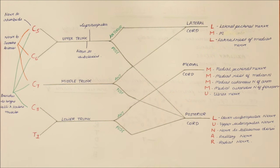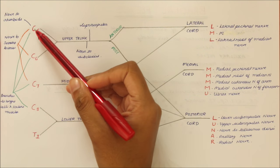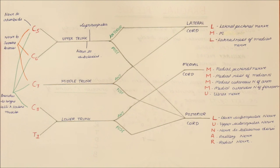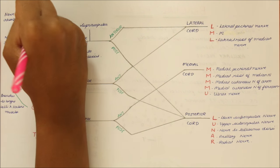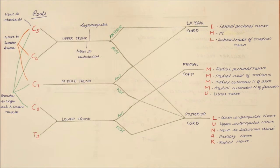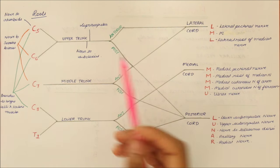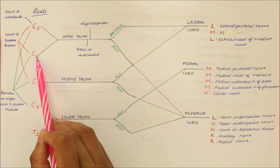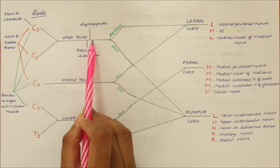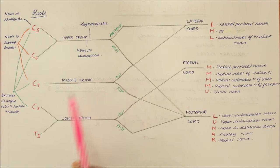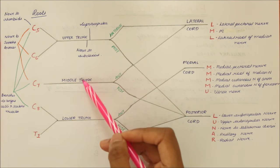The roots include C5, C6, C7, C8 and T1. Now the roots join together to form 3 trunks. C5 and C6 together form the upper trunk. C7 alone forms the middle trunk. C8 and T1 together form the lower trunk.